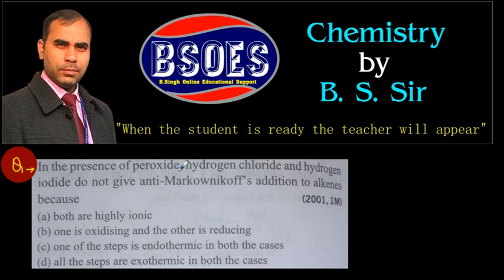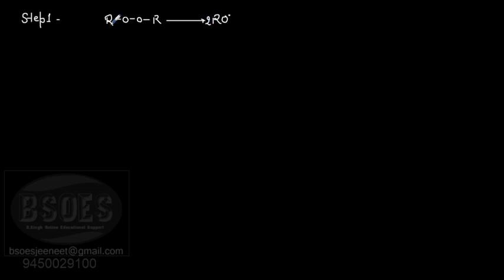If we look at the mechanism stepwise, this is a two-step process. In step one, the peroxide first generates free radicals. The peroxide dissociates to generate free radicals - this is the free radical generation step.